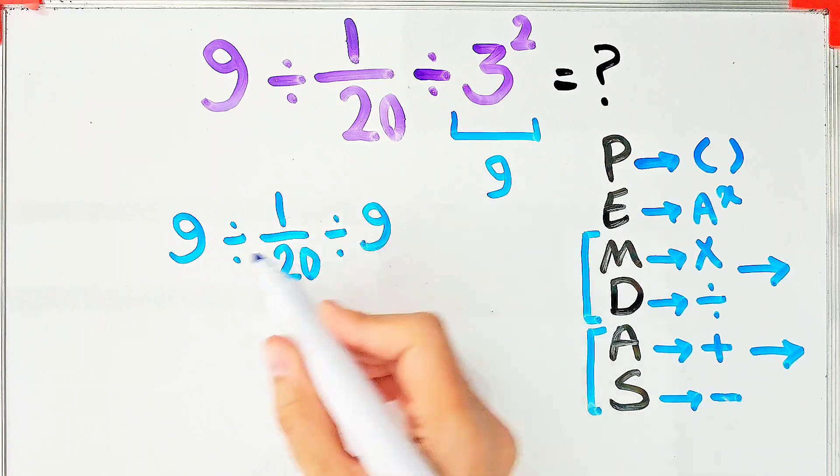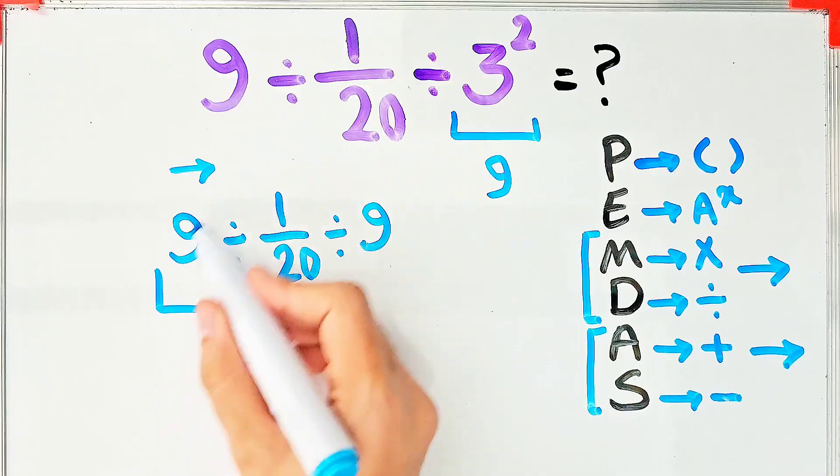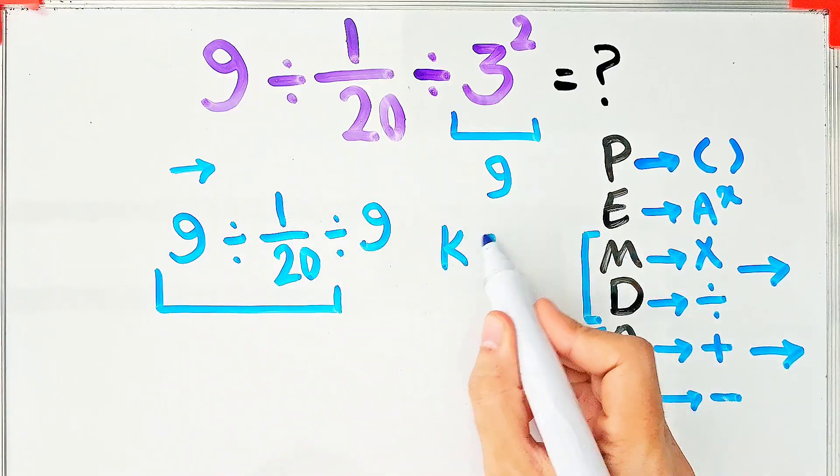Because we have two divisions, we start from the left and simplify the question. To solve the first part, we need to follow the KCF rule.